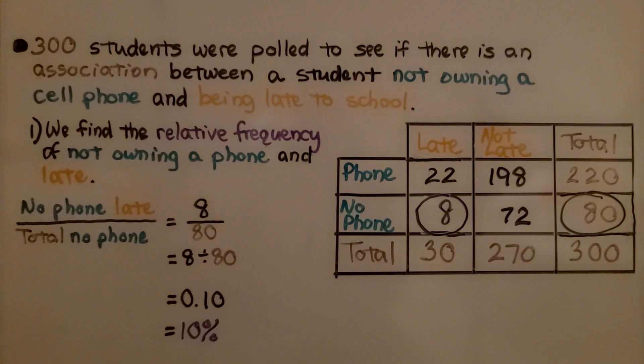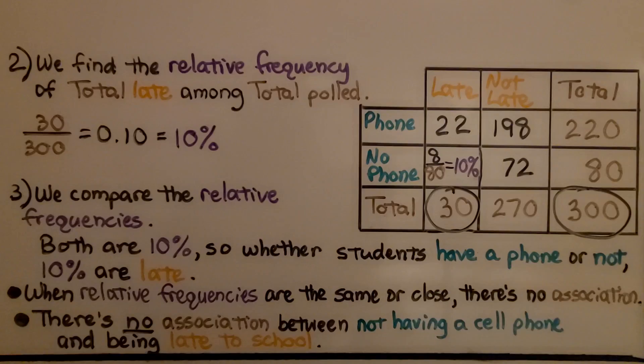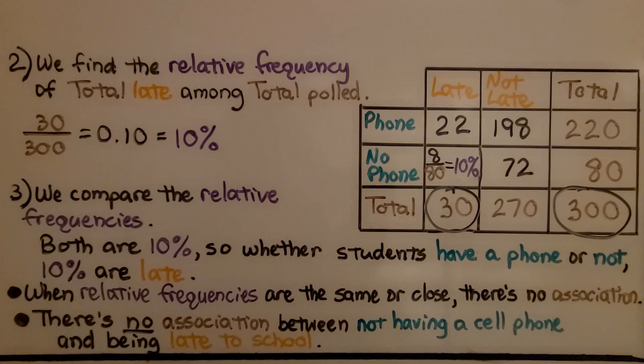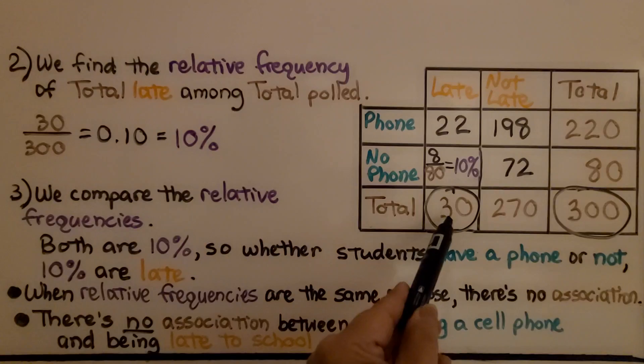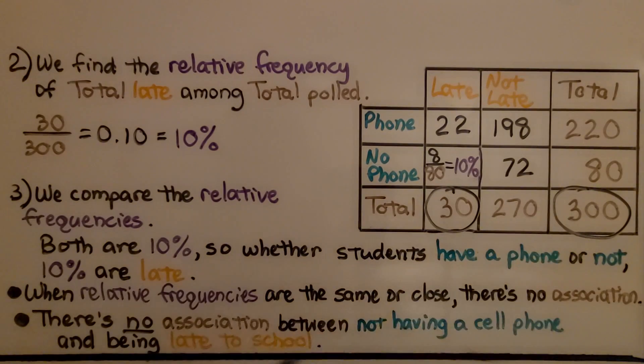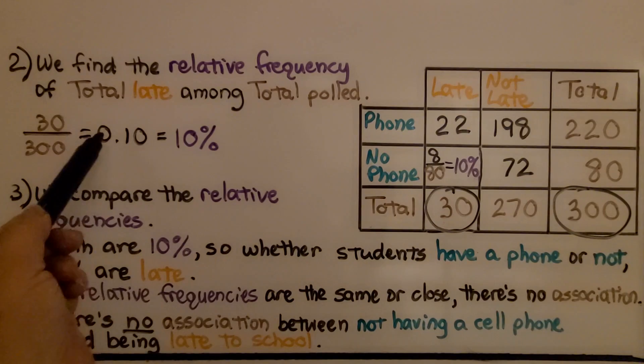We know that the relative frequency of not owning a phone and being late is 10%. Now we find the relative frequency of total late among total polled. That's 33/100, which is equal to 10 hundredths, which is equal to 10%.